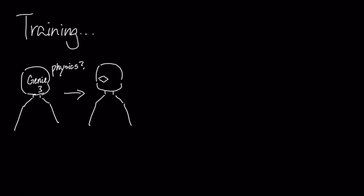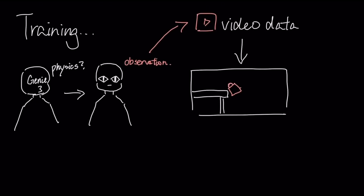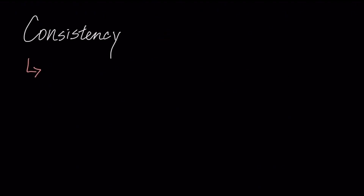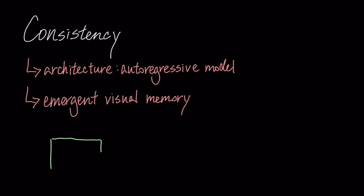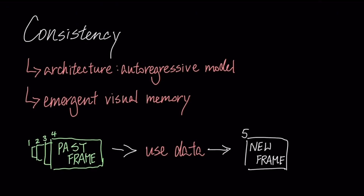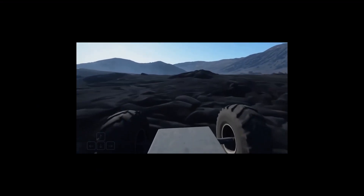How Genie 3 understands physics is through its training through observation. The model was trained on video data, so it learns that objects fall down because that's what they do in the countless hours of video it has seen. For how it remains consistent in generation, it uses an architecture of an auto-regressive model and emergent visual memory, meaning it generates each new frame by looking at the frames that came before it, simply building upon the visual data it has already created.